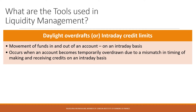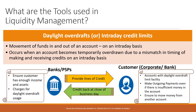Another tool used in liquidity management is the daylight overdraft, sometimes referred to as intraday credit limits. These can be used by corporations as well as other banks to manage their payments or cash flow — the movement of funds in and out of an account on an intraday basis. Daylight overdrafts are not normally provided to individual retail customers. Similar to an overdraft, this requires lines of credit to be granted by the bank or payment services provider, in order to ensure the company has enough daily cash flow to meet payment obligations prior to their account being funded by end of business each day.